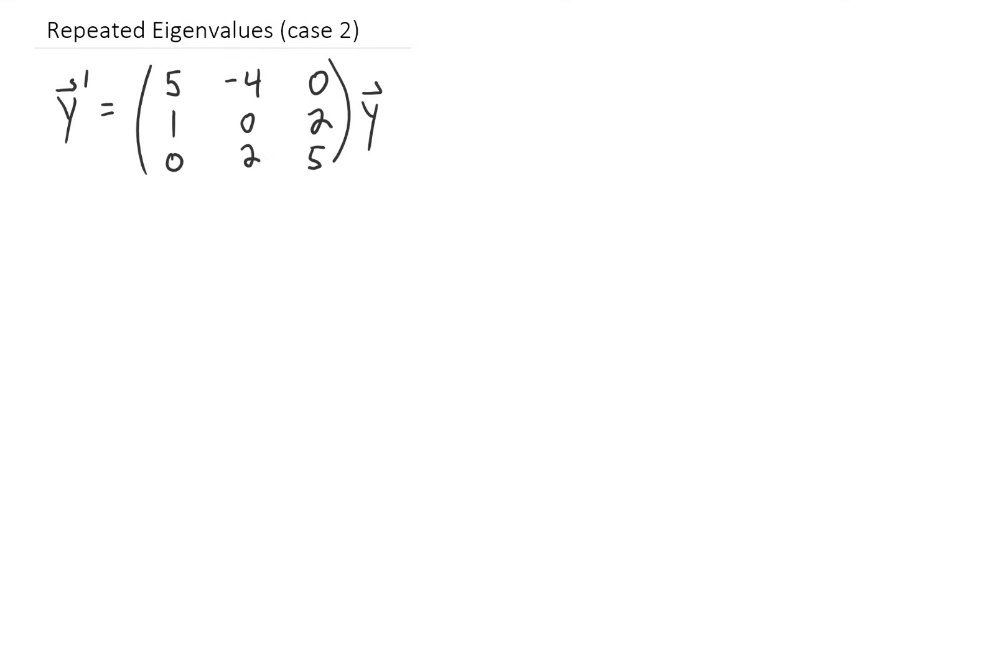This example is a little bit harder than the previous case. The first thing we need to do, as always, is find A minus λI and take the determinant. There's A minus λI, and taking the determinant gives me this line here.